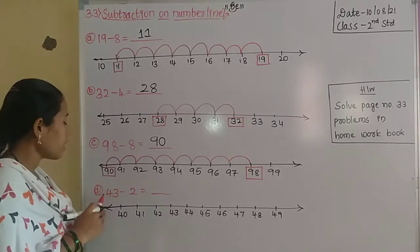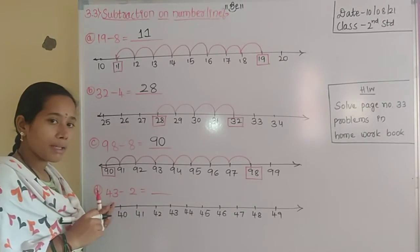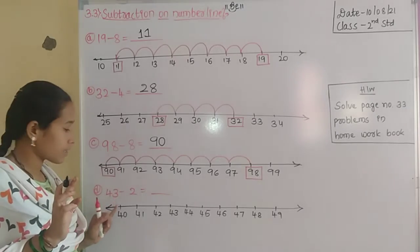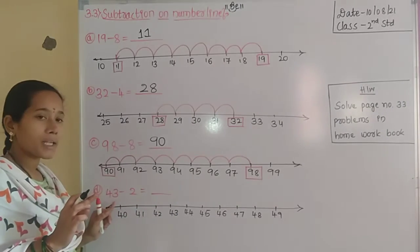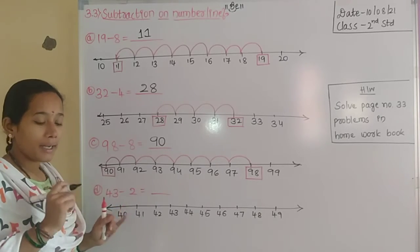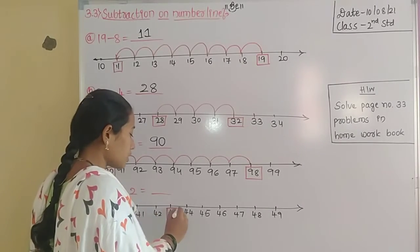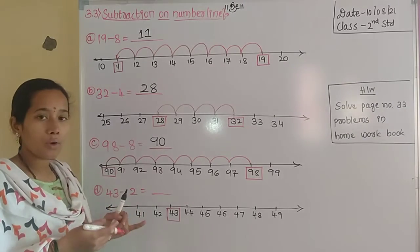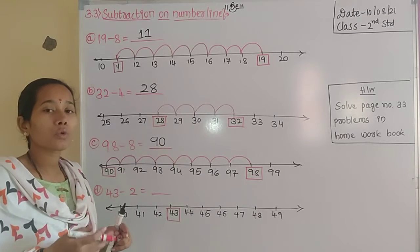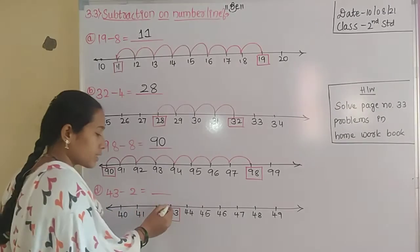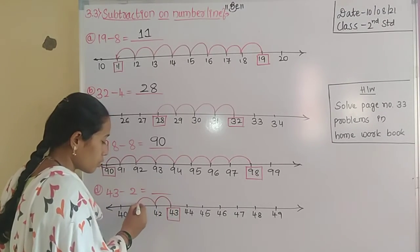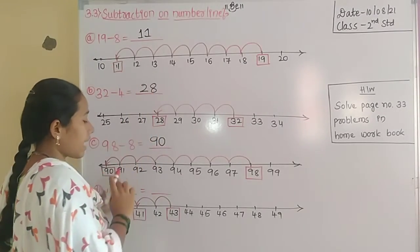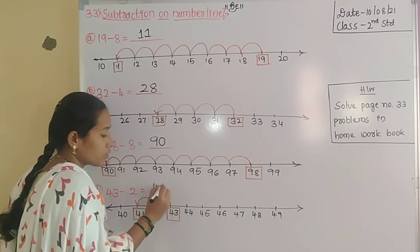The last problem: 43 minus 2 equals dash. 43 is the minuend and 2 is the subtrahend; we need to find the difference. The number line consists of numbers 40 to 49. First step: mark the minuend 43 on the number line. Then, as the subtrahend is 2, move 2 steps backward from 43 — 1 step, 2 steps. We get the answer 41. So 43 minus 2 equals 41.